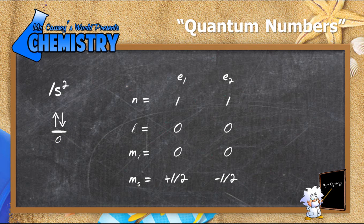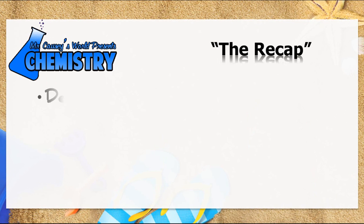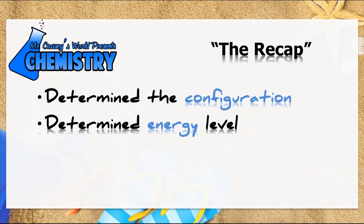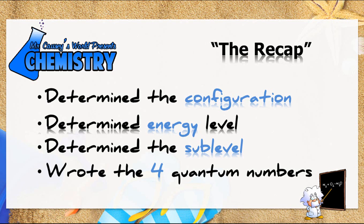Alright, that's all there is to it. There's the four quantum numbers for the first energy level. So let's recap. We determined the configuration. We determined the energy level. We determined the sub-level. And then we wrote the four quantum numbers. The way to get good at writing quantum numbers is just to do them over and over again. It's just practice.